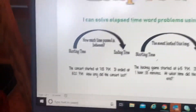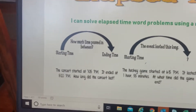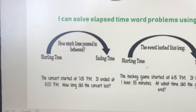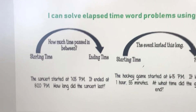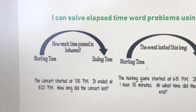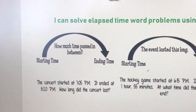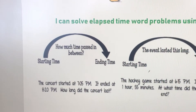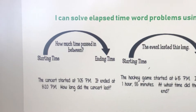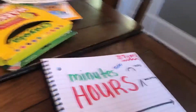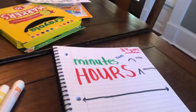So let's start with the easiest first: how much time passed in between. This problem says the concert started at 7:05 p.m. and ended at 8:20 p.m. How long did the concert last? I'm going to come over here now to my notebook and think about this problem.